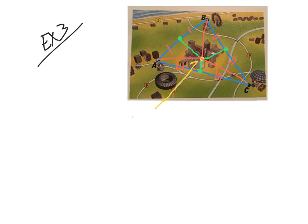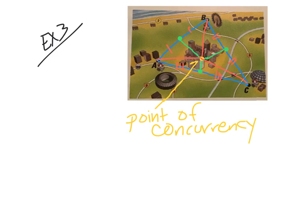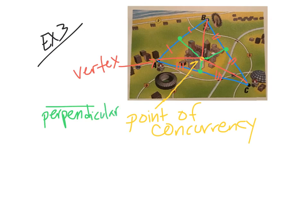In your journals, draw this triangle and label things to help you remember. The yellow point is the point of concurrency. Each outer point is called a vertex. The green lines are the perpendicular bisectors. Make sure this is in your journals — you're getting points for all of these.